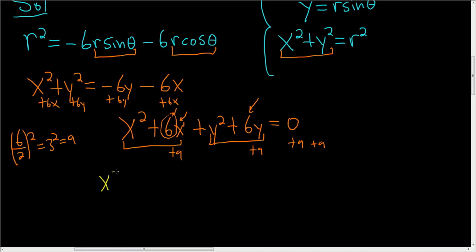This is x squared plus 6x plus 9, and then here we get plus y squared plus 6y plus 9. And on the right hand side 9 plus 9 is 18.